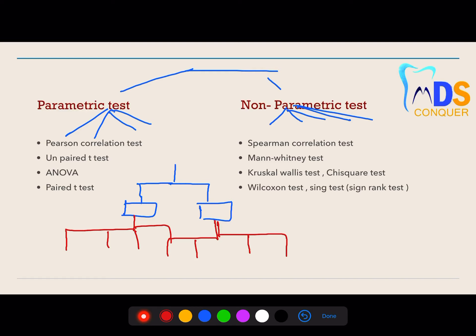The correlation test used for parametric is Pearson correlation test, and for non-parametric it's Spearman correlation test. Unpaired t-test, paired t-test, and ANOVA come under parametric tests, whereas non-parametric tests include Mann-Whitney test, Wilcoxon test, Kruskal-Wallis test, chi-square test, and sign rank test.